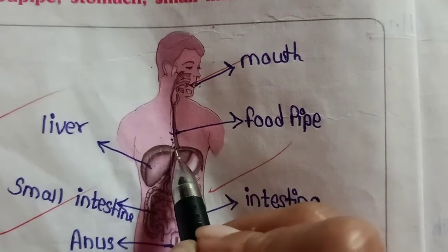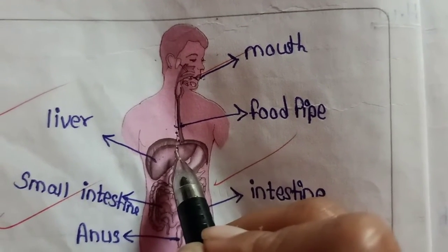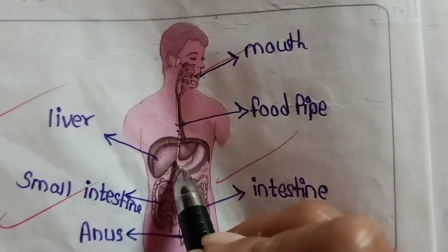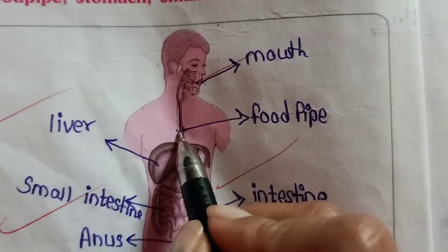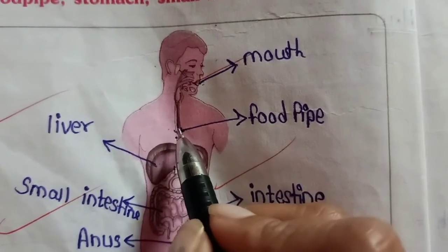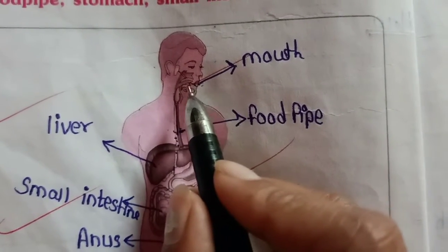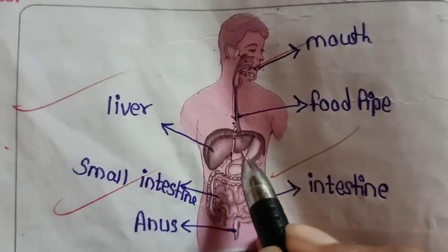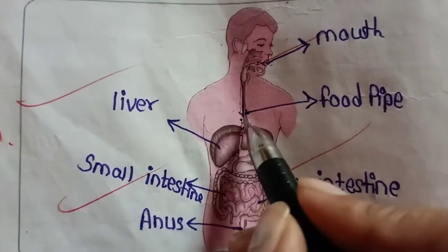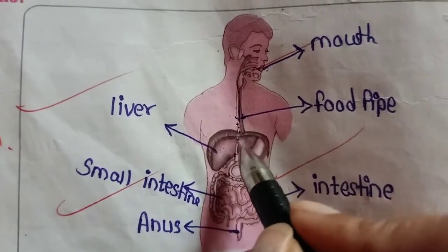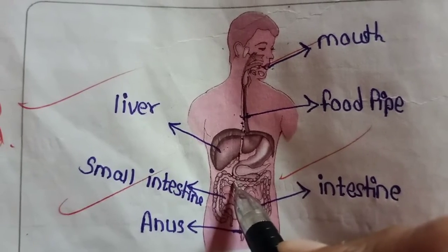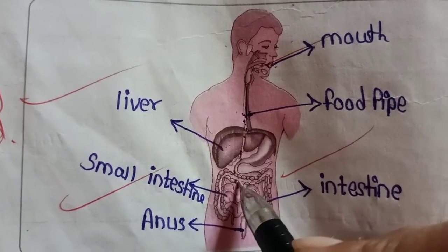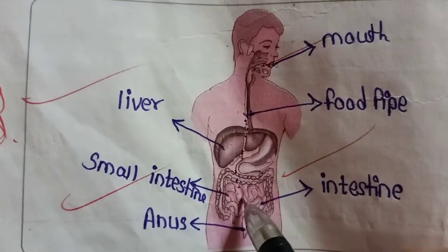This system works together to digest our food and give us energy. Let's see the function of the digestive system and its organs. There are lots of organs working together in the digestion process. First, food enters the long tube which is called the food pipe. Then food enters our stomach through the food pipe.